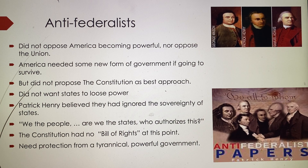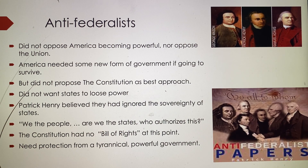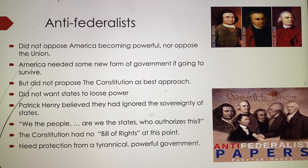The Anti-Federalists were against the Constitution but didn't necessarily oppose a powerful or unified America. They felt America needed some new form of government to survive, but they preferred something closer to the Articles of Confederation. They did not want the states to lose their powers, fearing the country would turn into something like the monarchies of Europe.